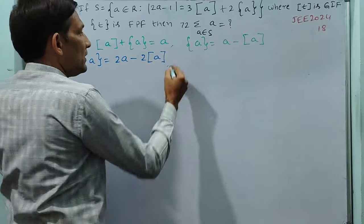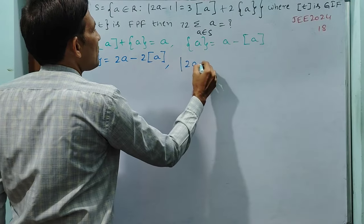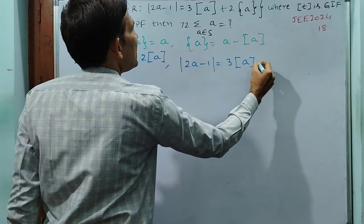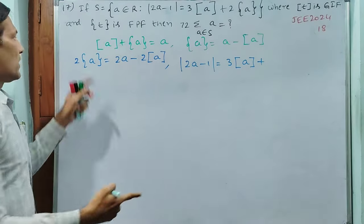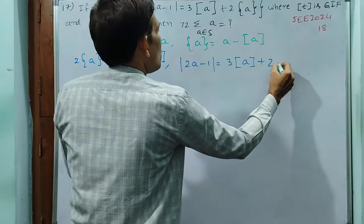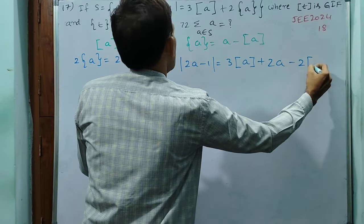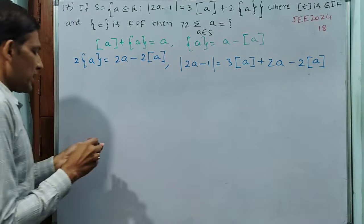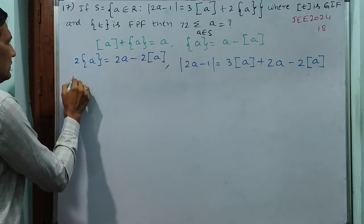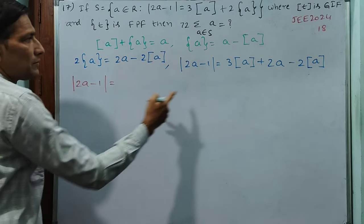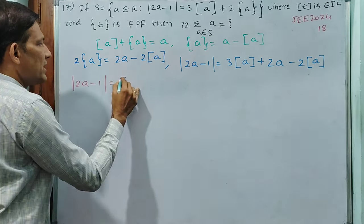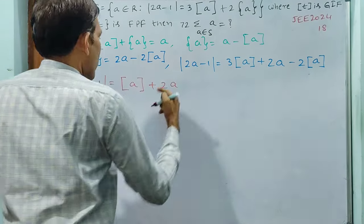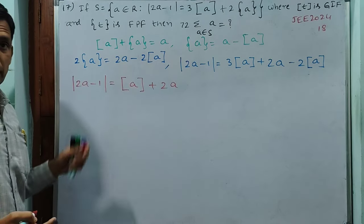Now we substitute this value into the equation. Modulus of 2a minus 1 is equal to 3 times [a] plus 2 times {a}, which we write as 3[a] plus 2a minus 2[a]. Simplifying, 3[a] minus 2[a] gives [a], so the equation becomes: |2a − 1| = [a] + 2a.